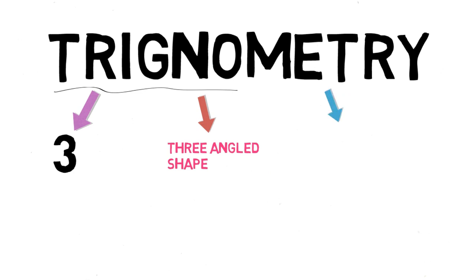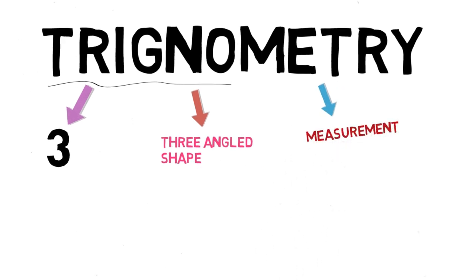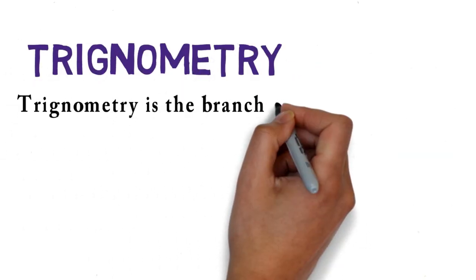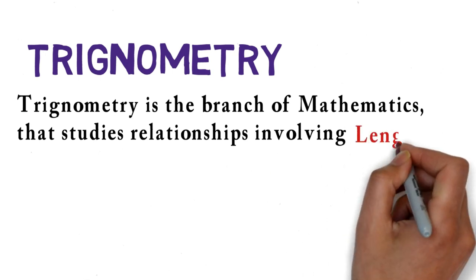So trigonometry is basically about measurement of triangles. Trigonometry is the branch of mathematics that studies relationships involving length and angles of triangles.